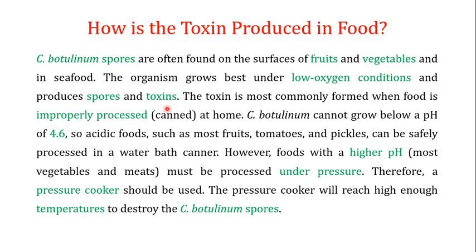The toxin is most commonly formed when food is improperly processed. C. botulinum cannot grow below a pH of 4.6, so acidic foods such as most fruits, tomatoes, and pickles can be safely processed in a water bath canner, since the acidic environment does not favor C. botulinum growth. However, foods with a higher pH like most vegetables and meats must be processed under pressure, because higher pH favors the growth of C. botulinum and hence toxin production.